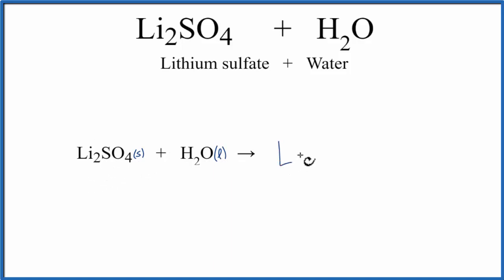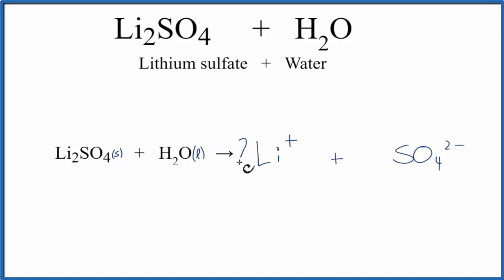So we'll have that Li plus, plus the sulfate ion, SO4 2 minus. Since we have this 2, the subscript of 2 after the Li, that means there's two lithium atoms. So when it dissociates, we need to have a coefficient of 2 to show that there are two lithium ions.